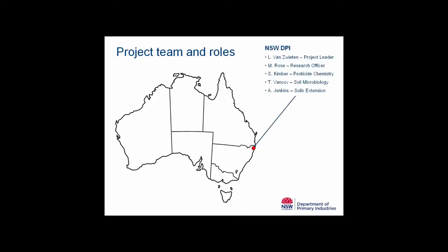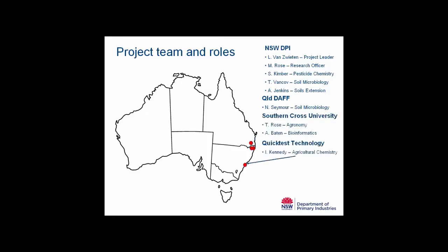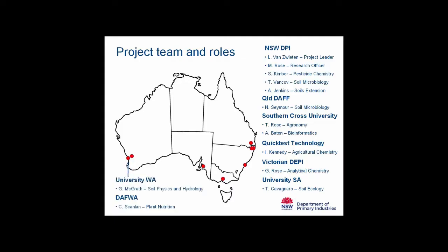It's a national project based out of Wagga Wagga here in New South Wales. We've also got collaborations with Queensland — Nikki Seymour at QDAF — Southern Cross University, Quick Test Technologies in Sydney, Victorian DEPI, University of SA, and over in the West, Craig Scanlon and Gavin McGrath contributing as well. As part of the project we'll be conducting field trials, transitioning from our literature review to glasshouse and laboratory studies on the effects of herbicides on particular microbial processes, then transferring that into the field to see how practically relevant those results might be.